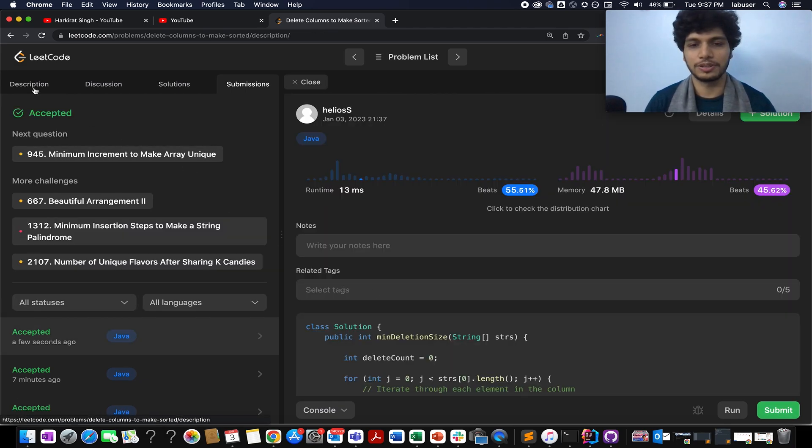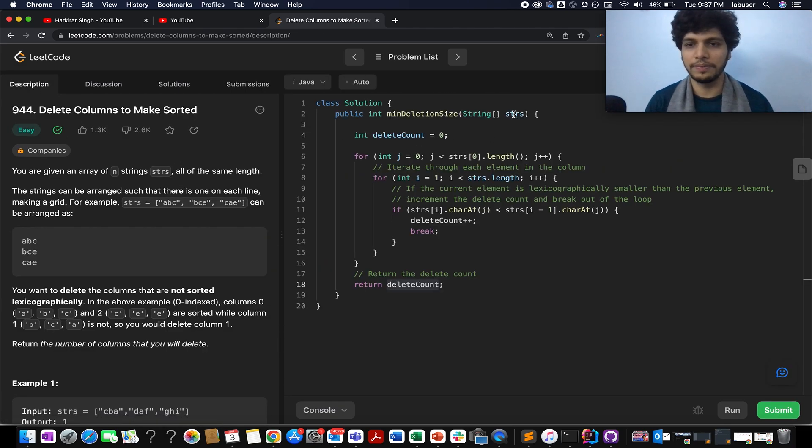Accepted. The time complexity of this approach would be order of n into m, where n signifies the number of rows and m signifies the number of columns. And space complexity, it is constant time. I hope you guys have really enjoyed it. If you did, please don't forget to like, share and subscribe to the channel. Your subscription truly means a lot. And I'll see you tomorrow with another fresh question, but till then, goodbye.